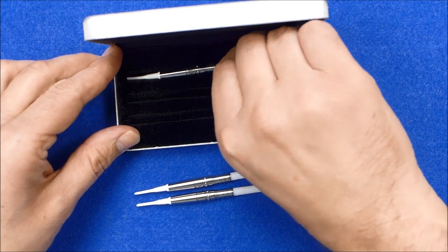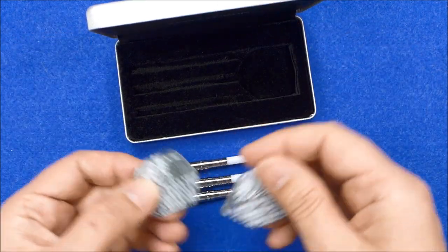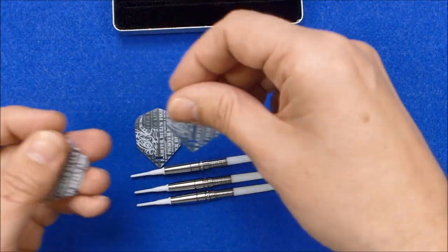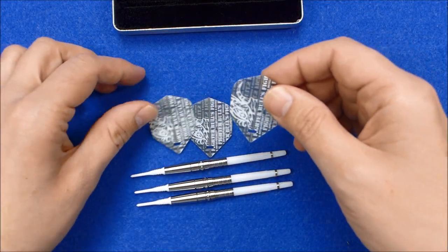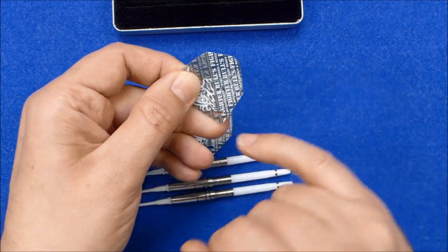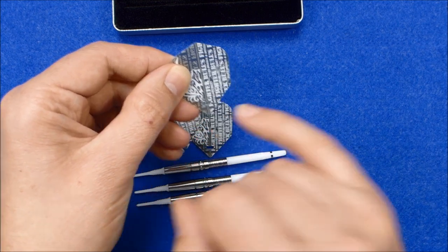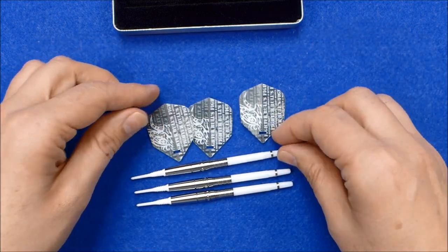The darts come with a set of soft tip points and some medium nylon stems with spring clips and the Bulls Fighter clear standard flights with the pre-punched slot for the rings on the stems.